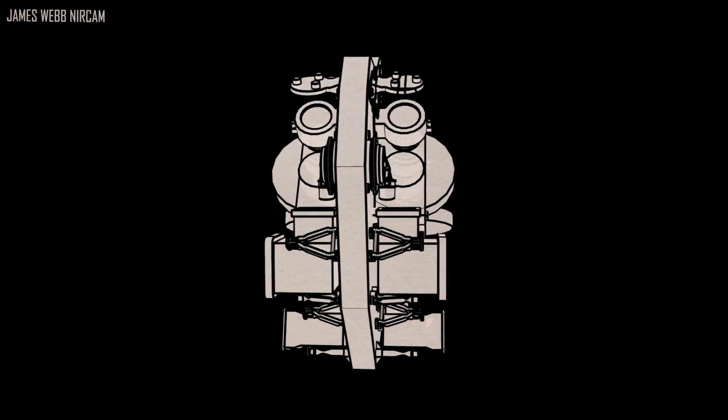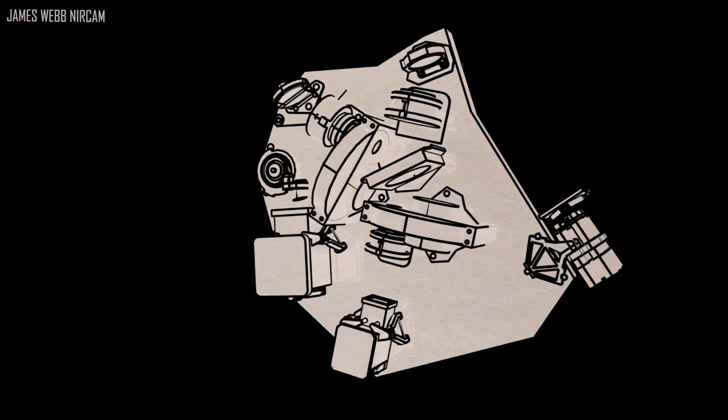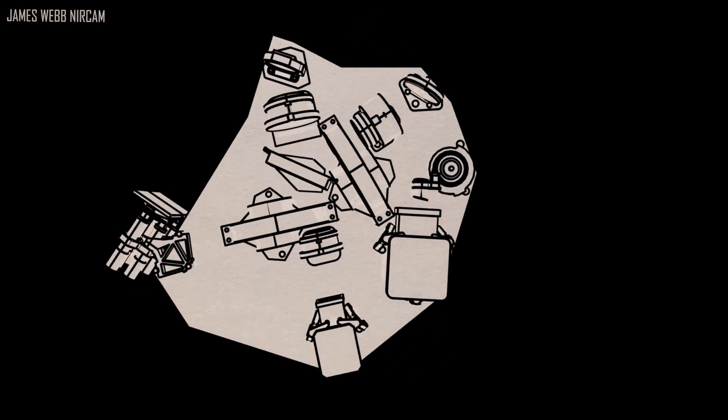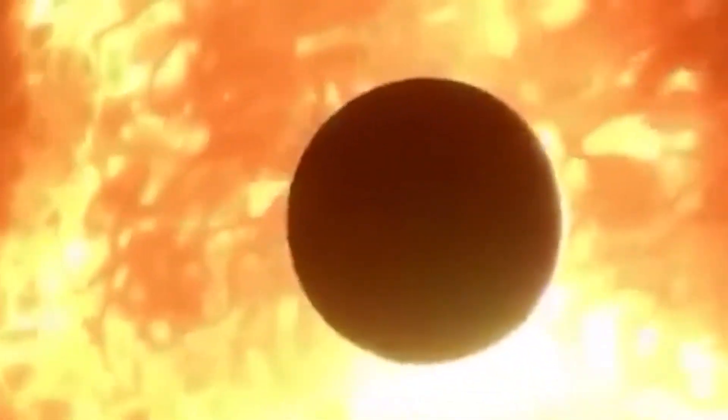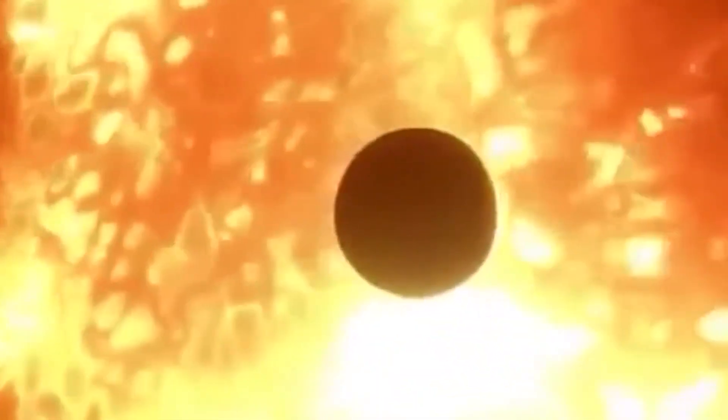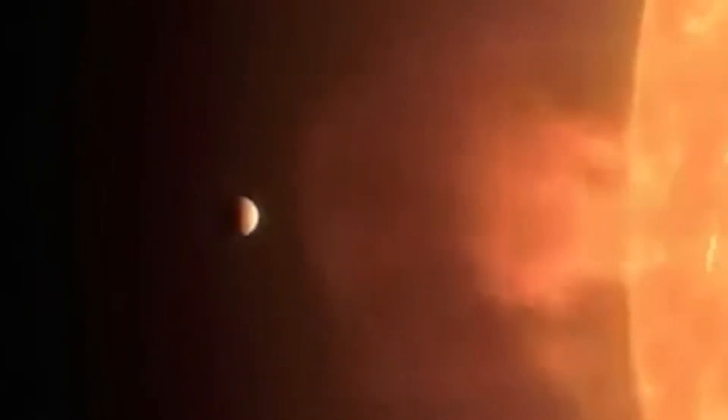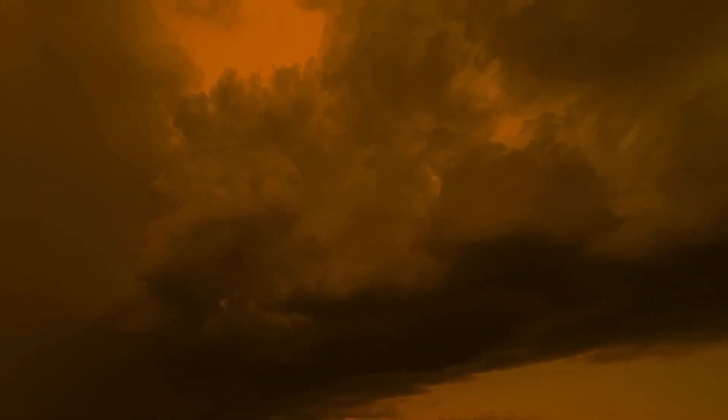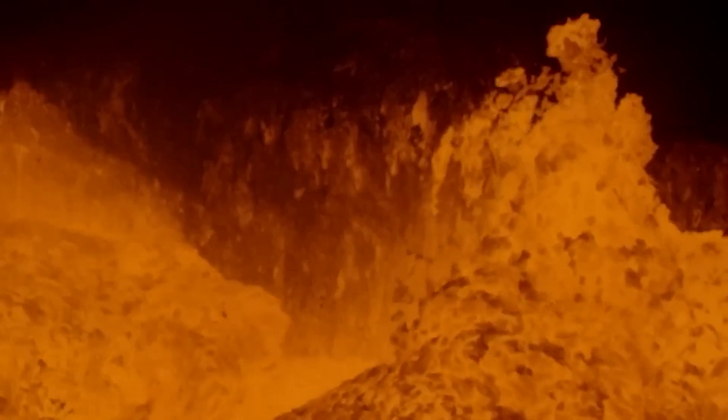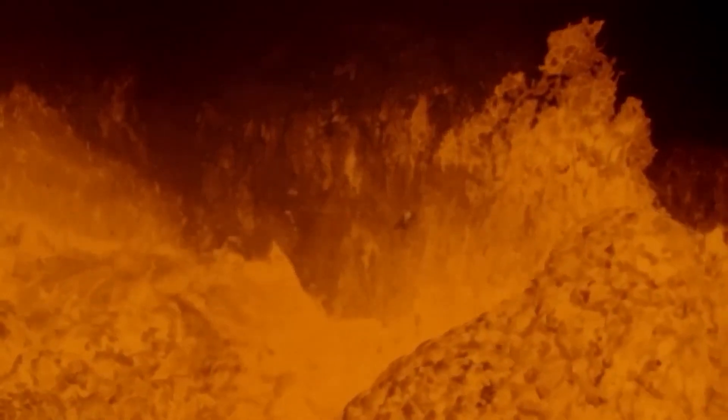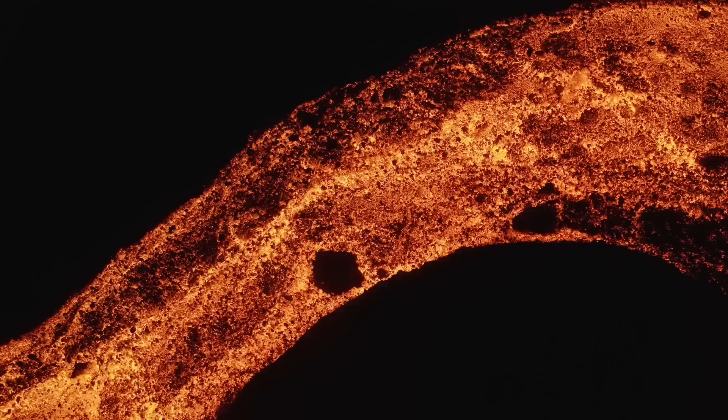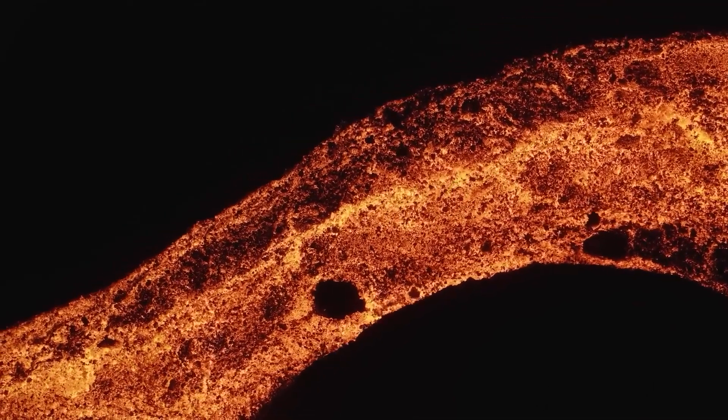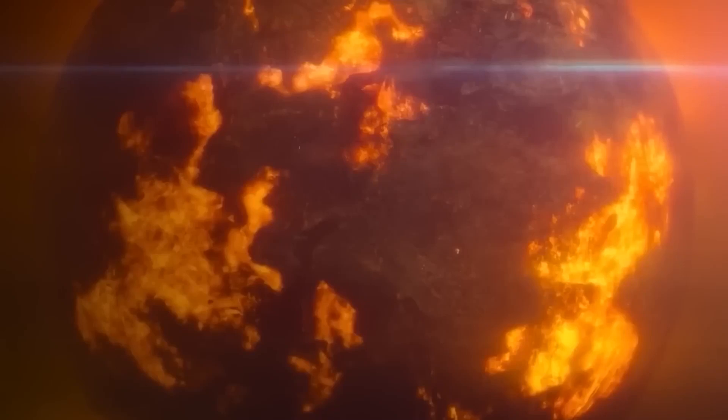Webb's near-infrared imager and slitless spectrograph observed the WASP-96 system for 6.4 hours while the planet travelled across the star. The result is a light curve illustrating the overall lowering of starlight during the transit, as well as a transmission spectrum demonstrating brightness variation of distinct infrared light wavelengths between 0.6 and 2.8 microns. The transmission spectrum reveals details of the atmosphere that had previously been hidden, such as the unmistakable signature of water, hints of haze, and proof of clouds that were previously believed not to exist. The light curve confirms properties already determined from other observations, such as its existence, size, and orbit.